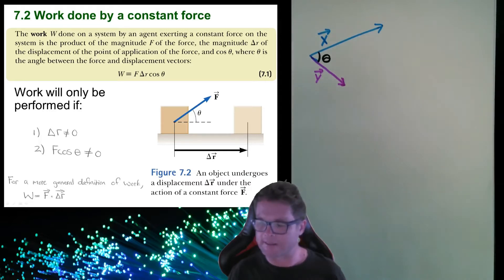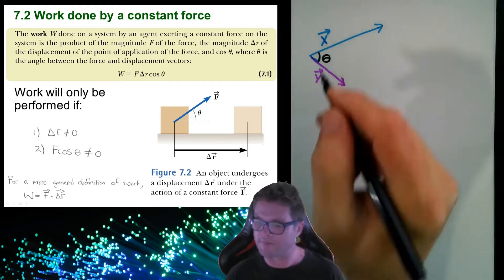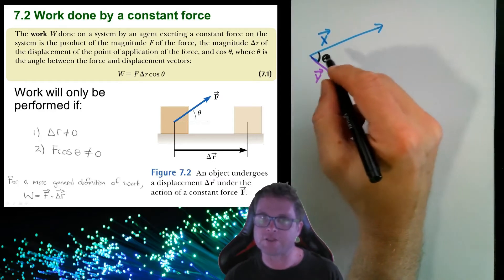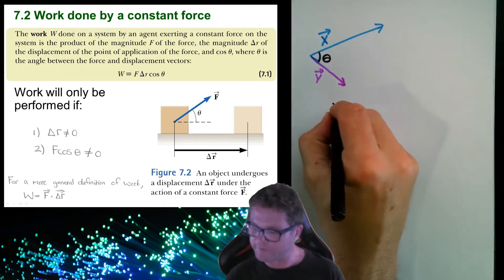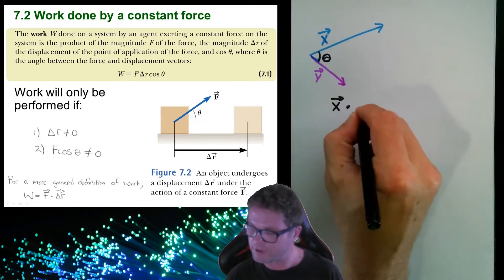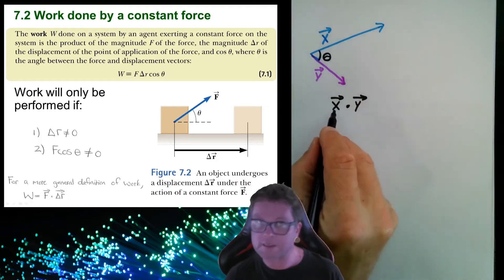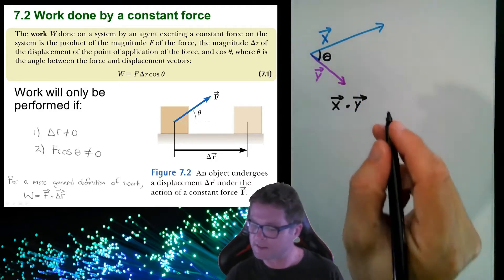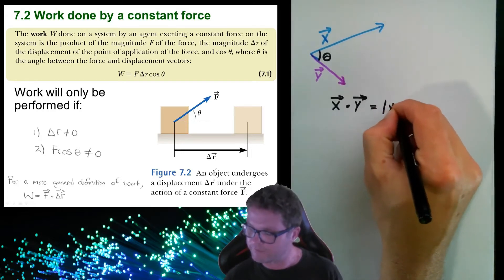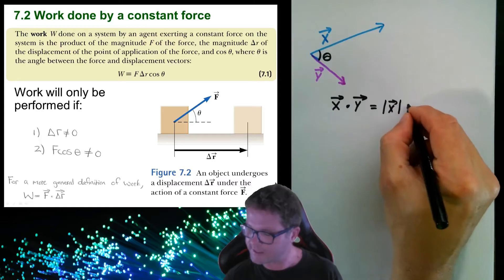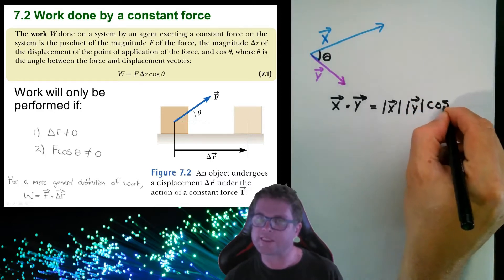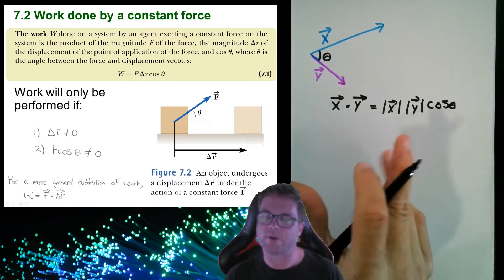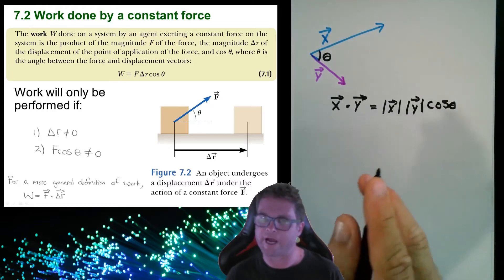Taking a look at how the dot product is defined: given two vectors x and y with some angle between them, the dot product x·y is defined as the magnitude of vector x times the magnitude of vector y times cos of theta, where theta is the angle between them.